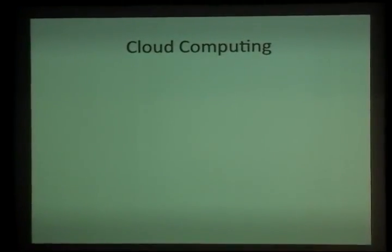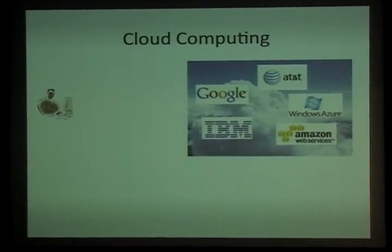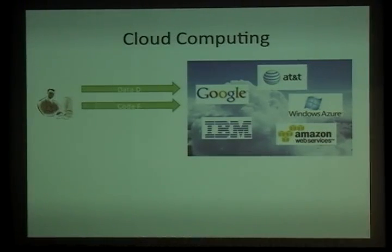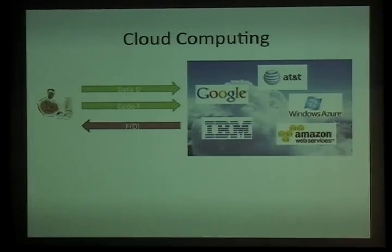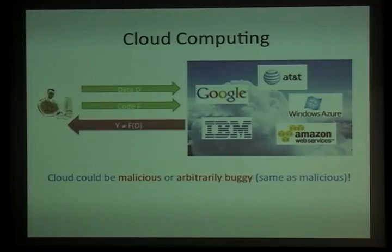Since we're talking about delegation, I have to mention cloud computing. In a typical cloud computing scenario, we have a user and a cloud server. The user starts with some initial data and potentially a program or code that he wants to run on this data. The user uploads this code and data to the server, and later the server sends back the evaluation of the program on the user's data. From a security point of view, one concern is that the server could be potentially malicious or arbitrarily buggy. In this work, we're mostly concerned with the problem of the server returning an incorrect answer — sending some other value instead of the correct program output.